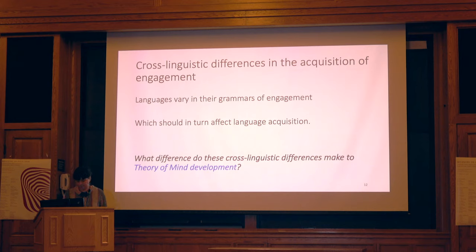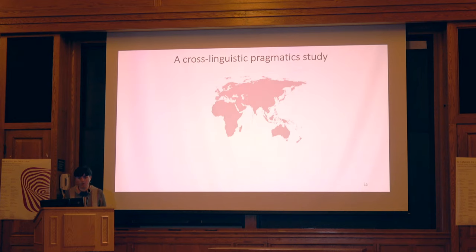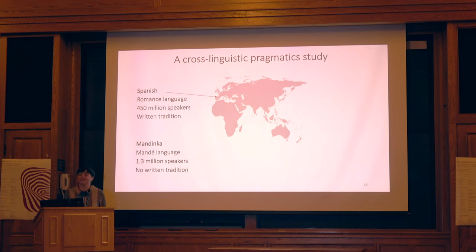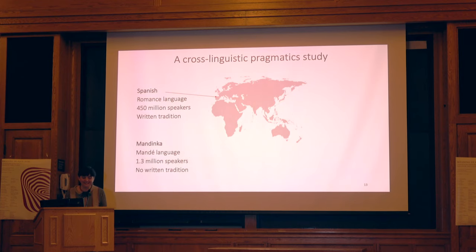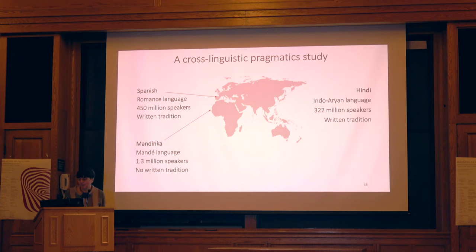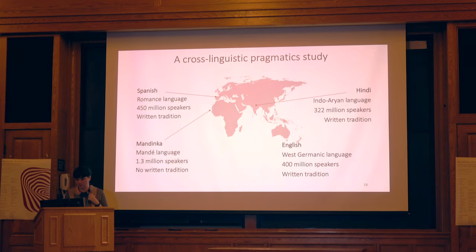So we ran a very simple cross-linguistic study looking at Spanish — a Romance language with lots of speakers and a written tradition, collected last week in Asturias. Mandinka — a Mande language with over a million speakers and a written tradition, collected in the Gambia last Christmas. Hindi — an Indo-Iranian language with over 320 million speakers and a written tradition, collected in New Delhi. And English — a West Germanic language, 400 million speakers, collected in Edinburgh, Scotland.